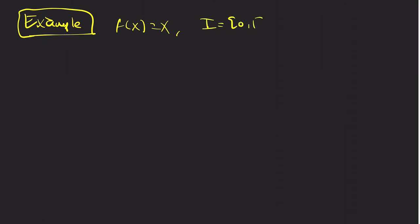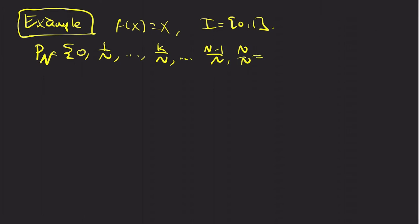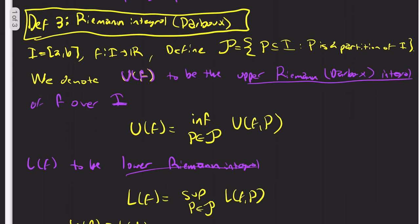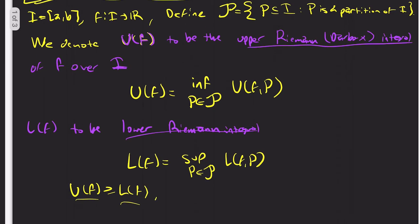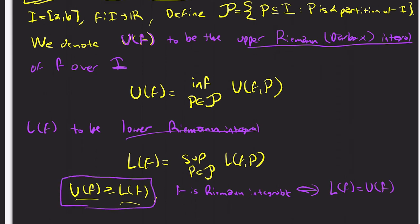I'm actually going to use the property that the upper sum is greater than or equal to the lower sum, which we'll prove in a later video. As an example, we're going to take f(x) = x. This is simple calc — it's integrable — but we're going to prove it with our new definition. F is Riemann integrable if and only if L(F) equals U(F). So this in general is true, but this is our main definition now.